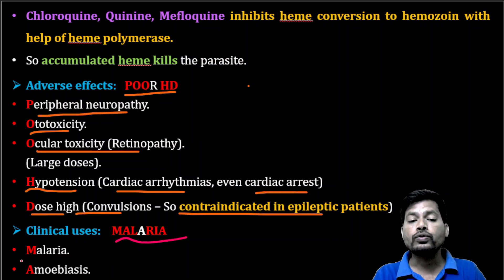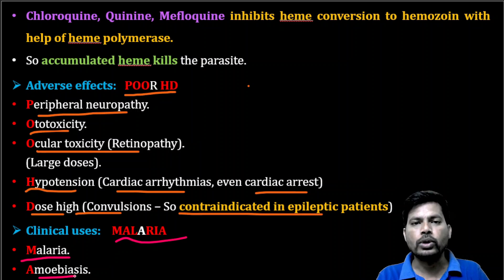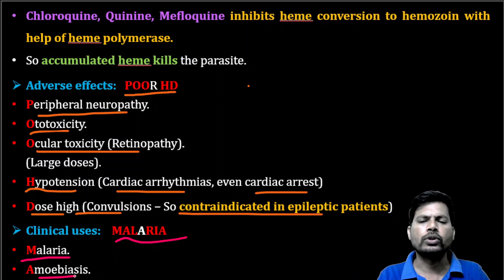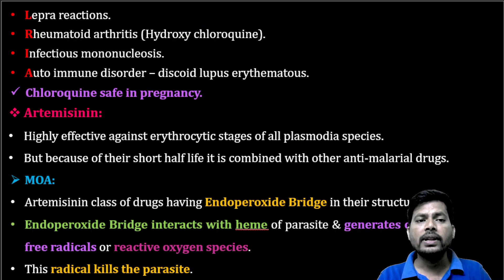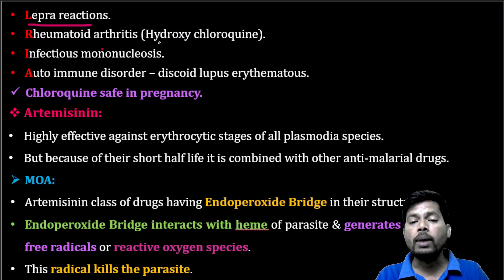Using the mnemonic 'MALARIA': chloroquine is useful in the treatment of malaria caused by different species of Plasmodium. It also helps in the treatment of amoebiasis caused by Entamoeba histolytica — though the specific drug for amoebiasis is metronidazole. Chloroquine is also used in the treatment of lepra reactions, which are reactions observed after treatment with antileprotic drugs.